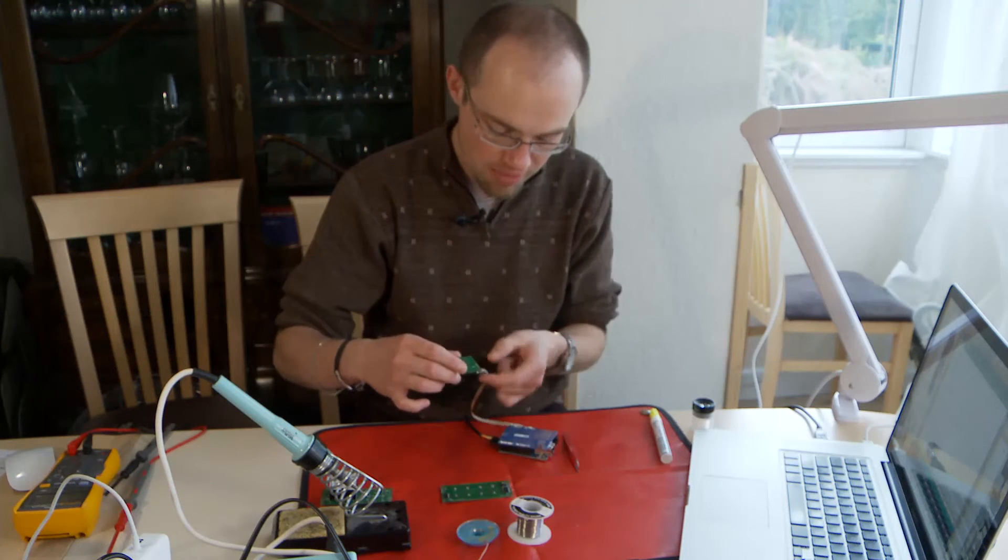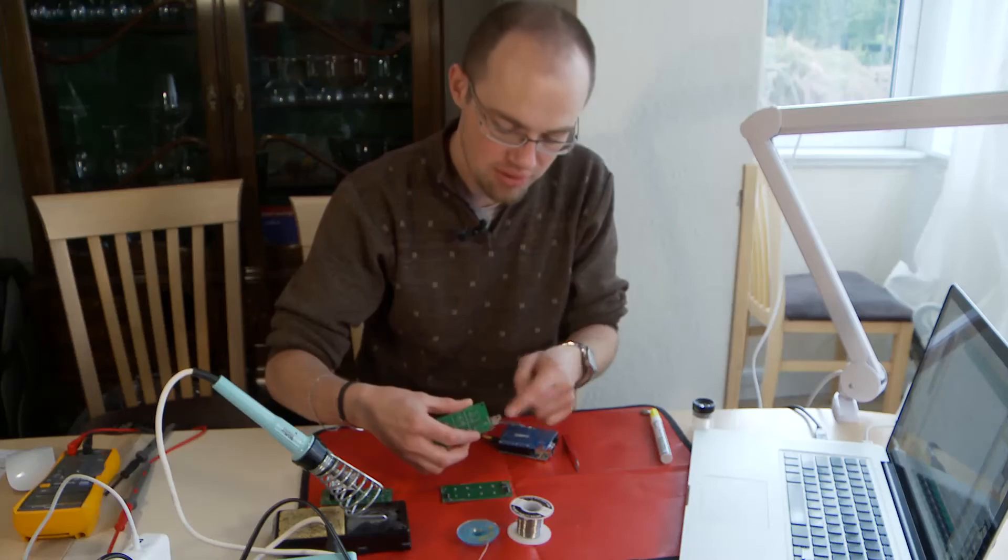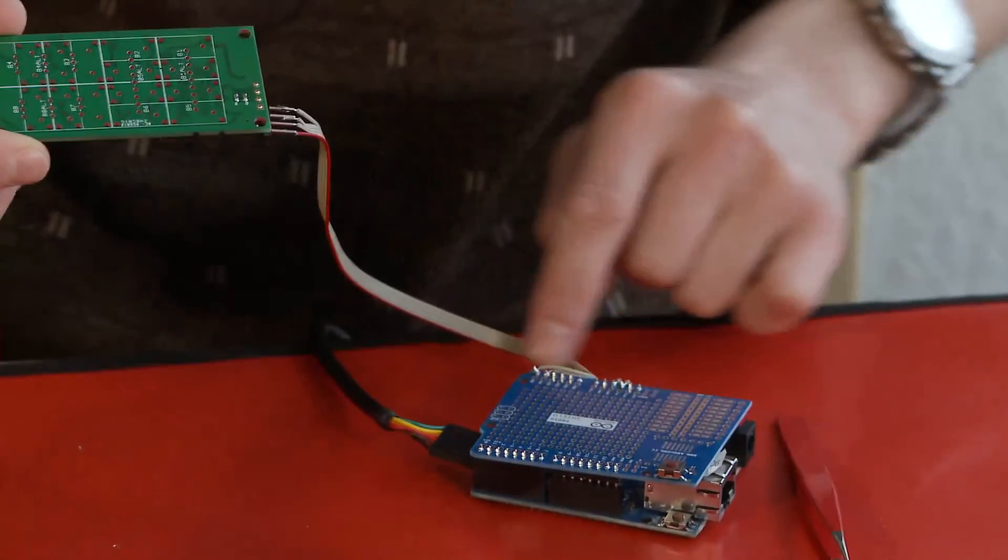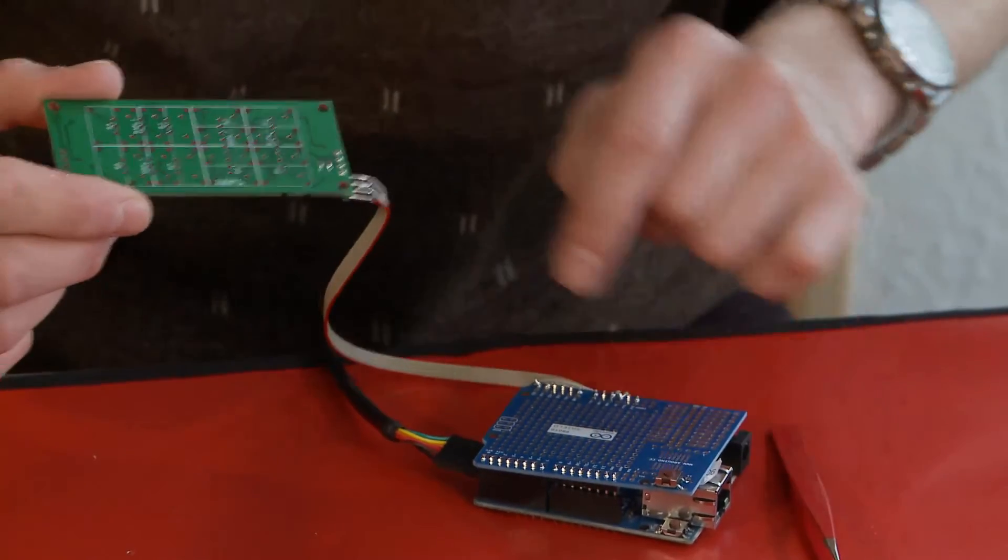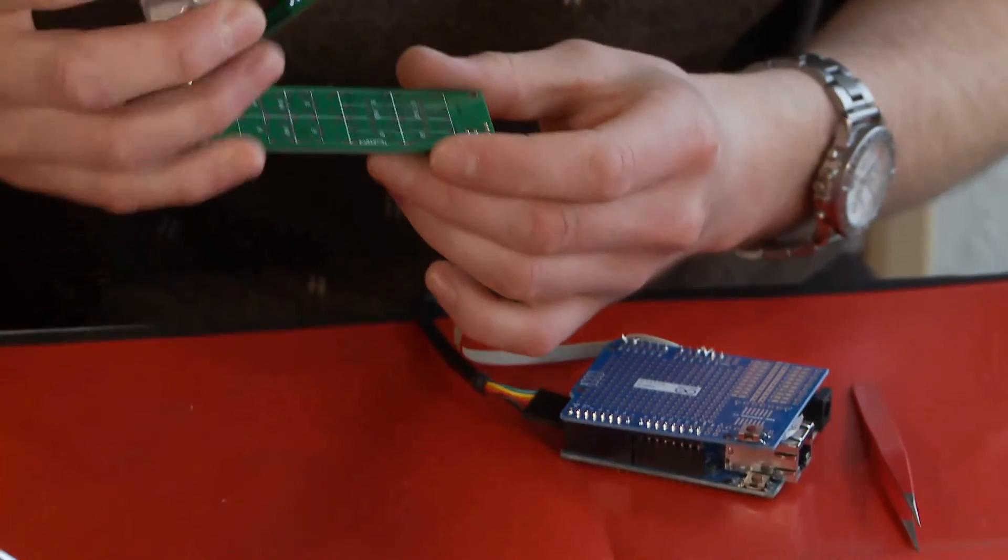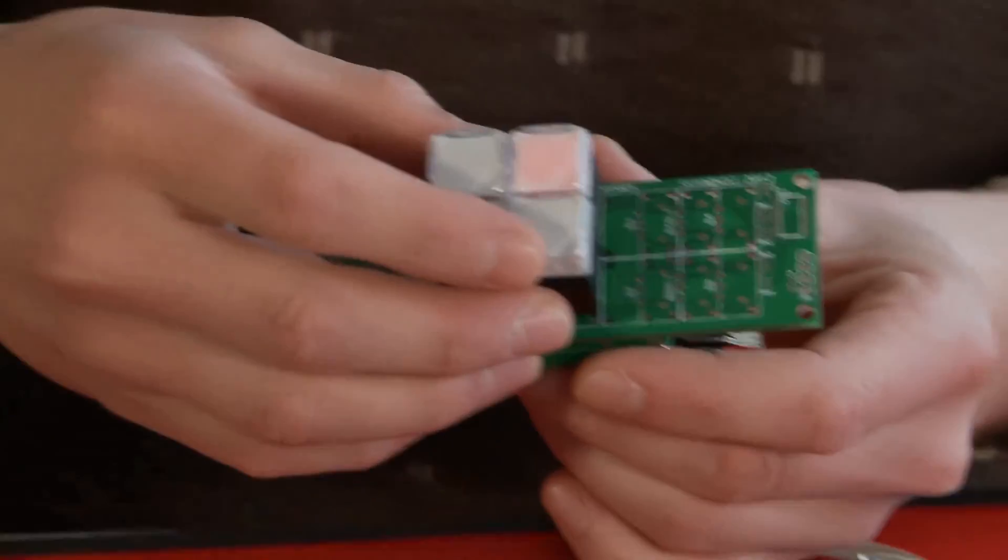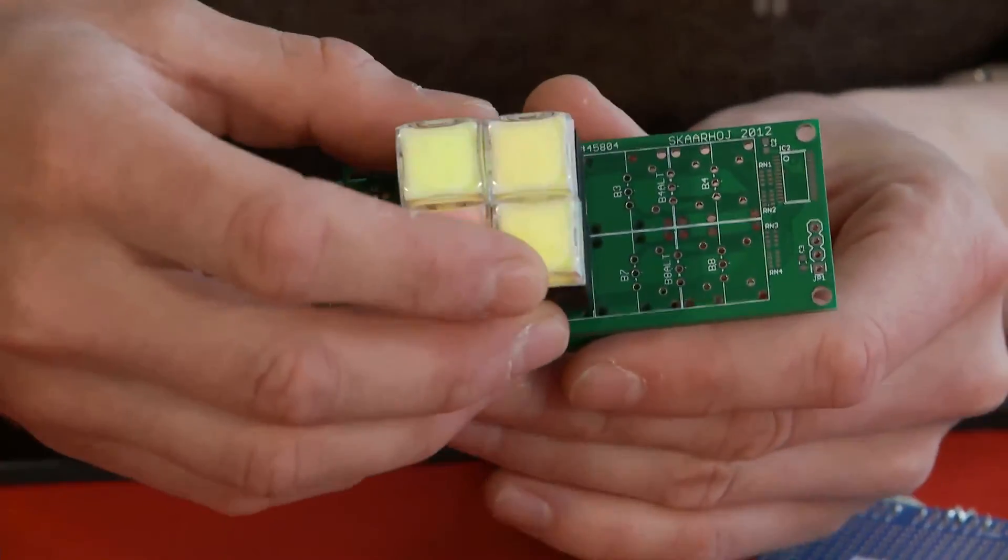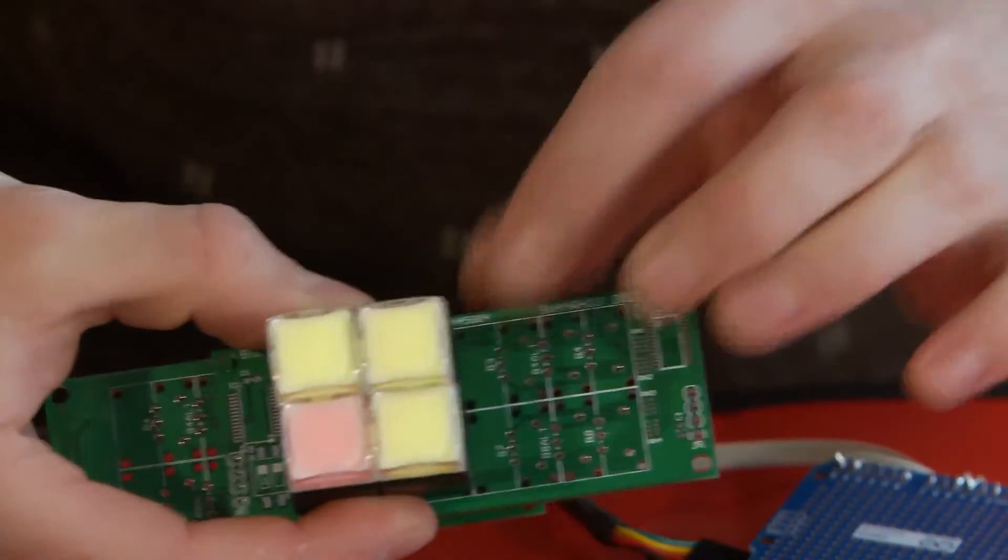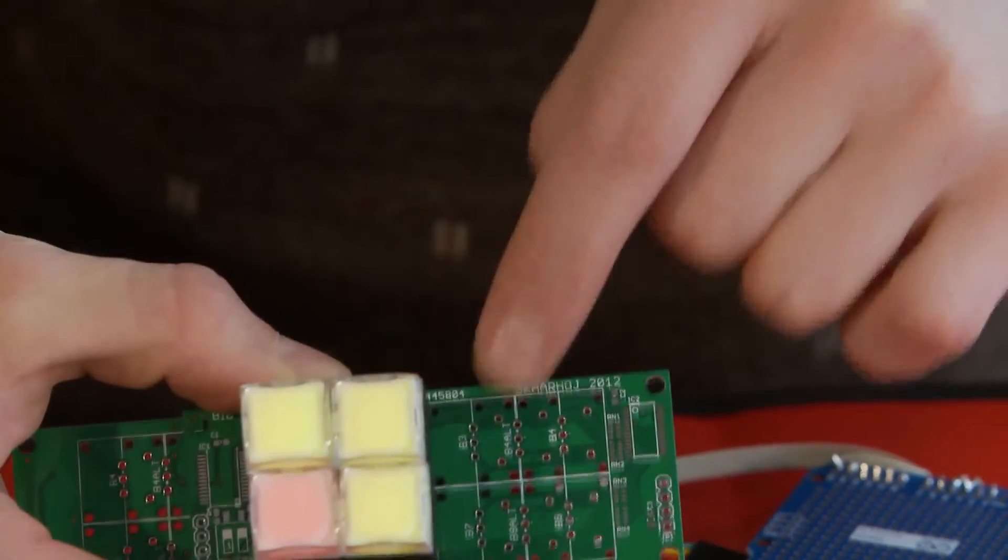So I am powering up the board via this cable and it is taking power from the Arduino board and then I take the buttons and I place them exactly where they are. And they should be placed in the original setup when you have to solder them.